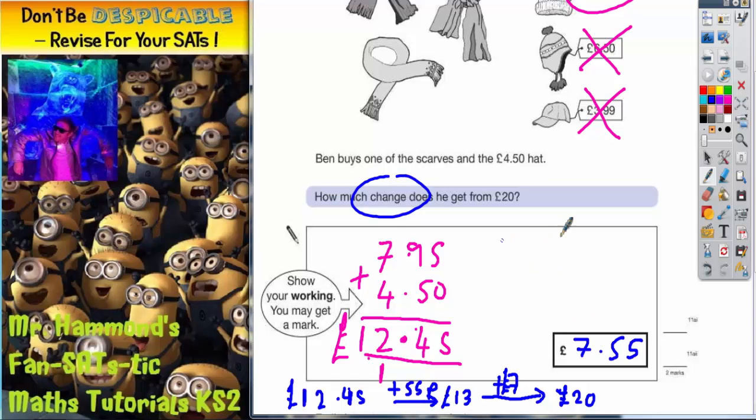If you did want to do it using a column method, you could have done this. You could have done £20 take away £12.45. A bit trickier to do as a column method because there's lots of zeros at the top, but nevertheless we'll have a go.